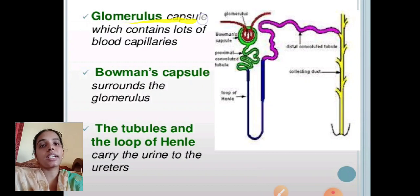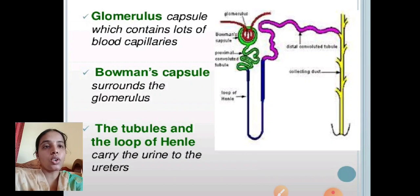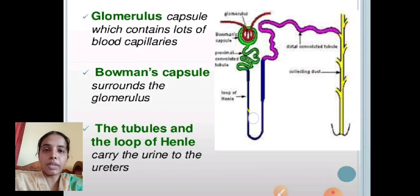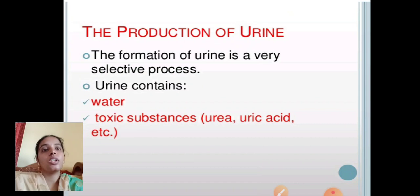The glomerulus is a capsule containing numerous blood capillaries, and the Bowman's capsule surrounds the glomerulus. The tubules — including the proximal convoluted tubule, distal convoluted tubule, and loop of Henle — carry the urine towards the ureter.